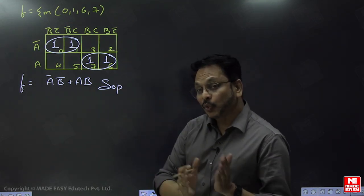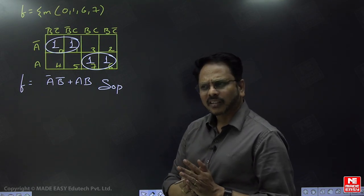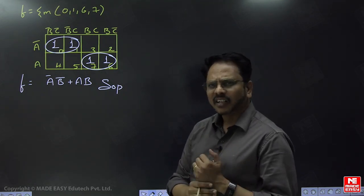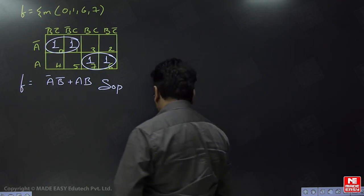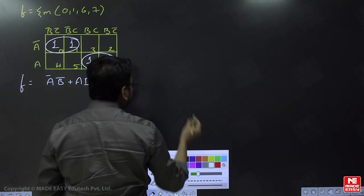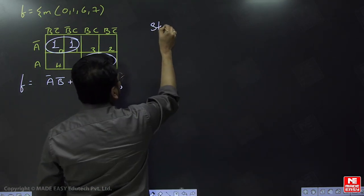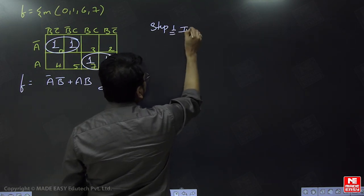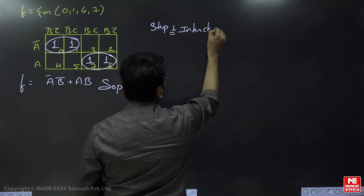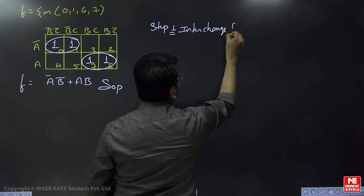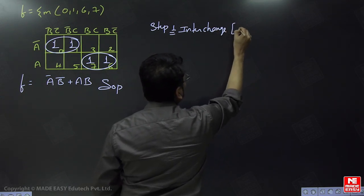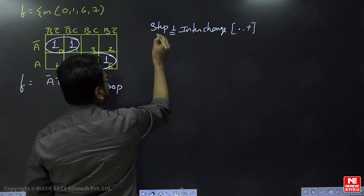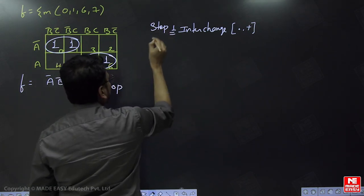The K-map has to be changed in a specific way. Step one in the K-map changes: interchange the operator. We are having dot and plus as our two operators — now interchange them. So dot becomes plus.